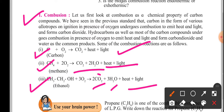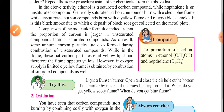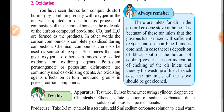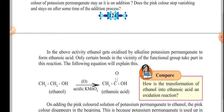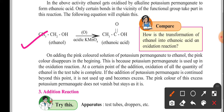The next chemical property is oxidation. Oxidation is almost the same as combustion. Here oxygen is absorbed by hydrocarbons or carbon compounds in the presence of acidic potassium permanganate or potassium dichromate, forming another carbon compound. The example given is ethanol undergoing oxidation in the presence of acidic potassium permanganate.